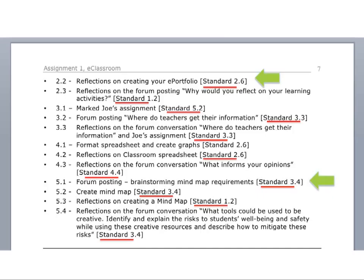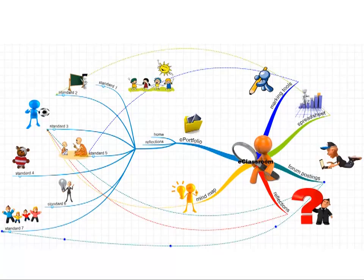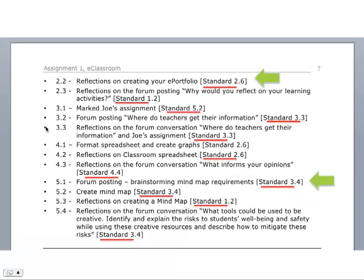Let's look at another one — 5.1 down here. Forum posting and brainstorming mind map requirements directly satisfy standard 3.4. There it is on the mind map. Follow the red line and it should be standard 3.4 — that's how that works. For visual people, reading text is an effort, so you get a highlighter and highlight it so you can see what relates to what.